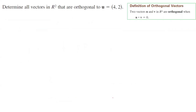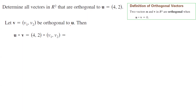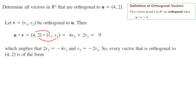Another typical question: given vector u with components 4 and 2, determine all vectors orthogonal to it. Take an arbitrary vector with general components v1 and v2. For this vector to be orthogonal to u, their dot product must equal 0, so 4 times v1 plus 2 times v2 must equal 0. From algebra, this means 4v1 equals negative 2v2, or v2 equals negative 2 times v1.